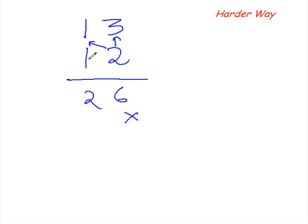So let's see the usual way of multiplying 13 with 12. So 2 times 3 is 6, 2 times 1 is 2, 1 times 3 is 3, 1 times 1 is 1. Now add the numbers in the column. So 6, 3 plus 2 is 5 and this is 1.